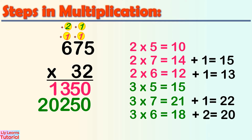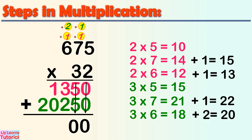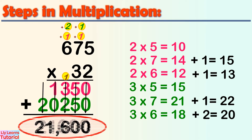Add the partial products, starting from the 1s place going to the left. 0 plus 0 equals 0. 5 plus 5 equals 10. Write 0 down and carry over 1. 3 plus 2 equals 5, plus 1 equals 6. 1 plus 0 equals 1, then bring down 2. The answer is 21,600.